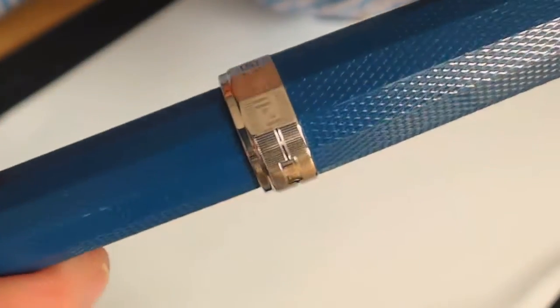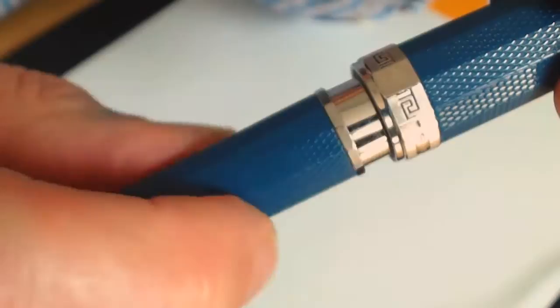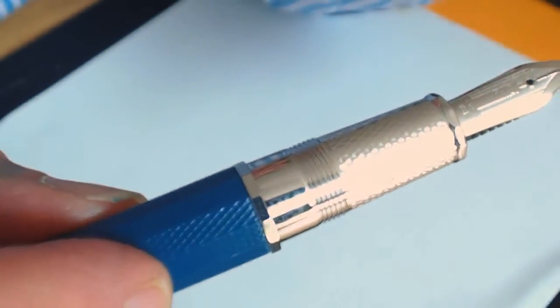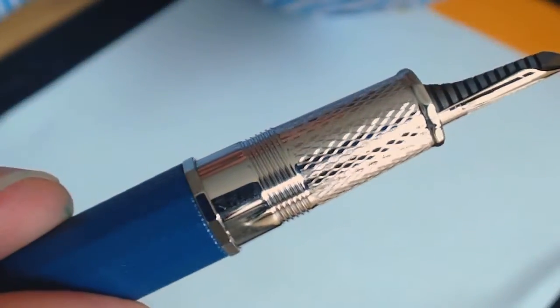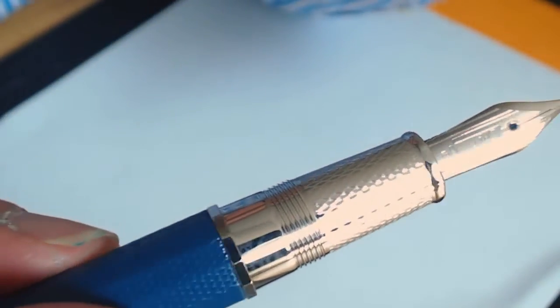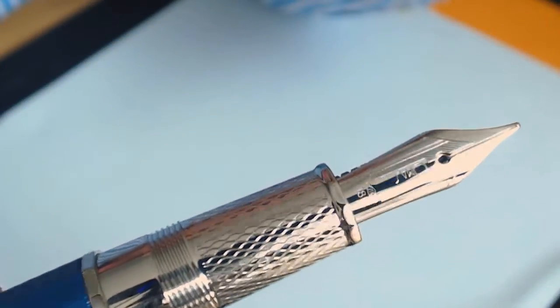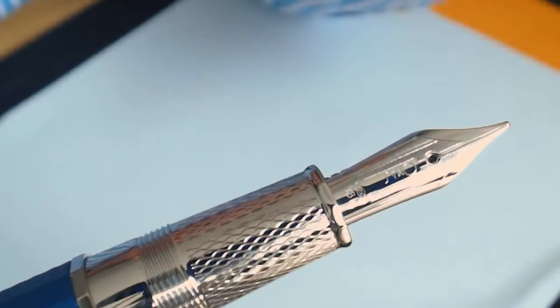The other thing that's very different from Milord is the metal section. And again, the classic OMAS style. There's been a lot of very nice work done around the metal. Beautiful engraving there. And the nib is, of course, a classic. Absolutely beautiful.